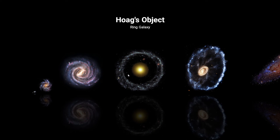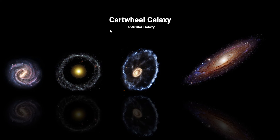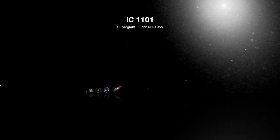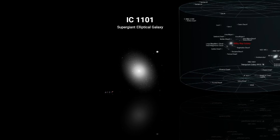What's bigger than the Milky Way? I thought the Milky Way was everything! Hoag's Object, a ring galaxy. Cartwheel Galaxy. Andromeda Galaxy — are you telling me there are several galaxies and I just thought the Milky Way was the biggest thing ever? Earth is really gone. IC 1101, a super giant elliptical galaxy.